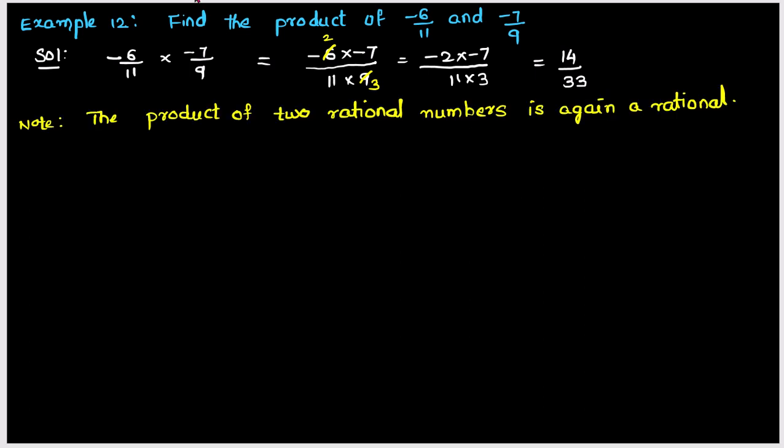So note the product of two rational numbers is again a rational number.